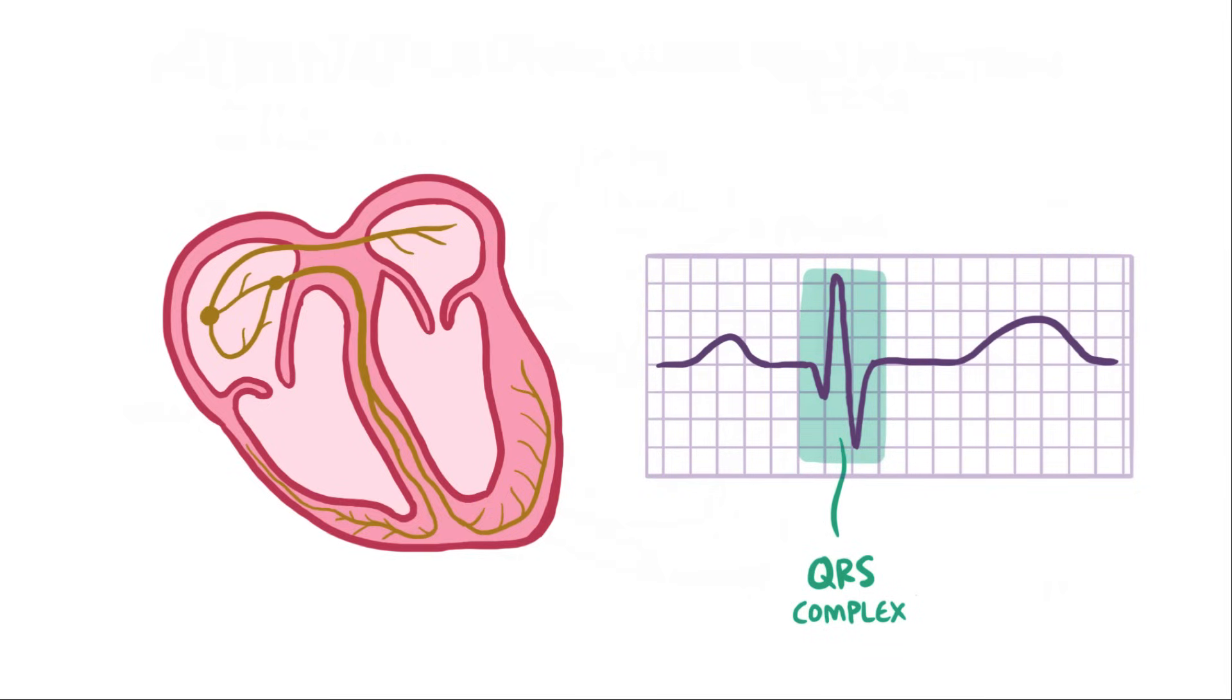Now if we just look at the QRS complex, which normally lasts less than 100 ms or 2.5 little boxes, it's usually made up of three smaller waves, also called deflections. If the first wave after the P-wave is downwards, or negative, it's called a Q-wave, which you can remember by the letter Q having a downward tail.